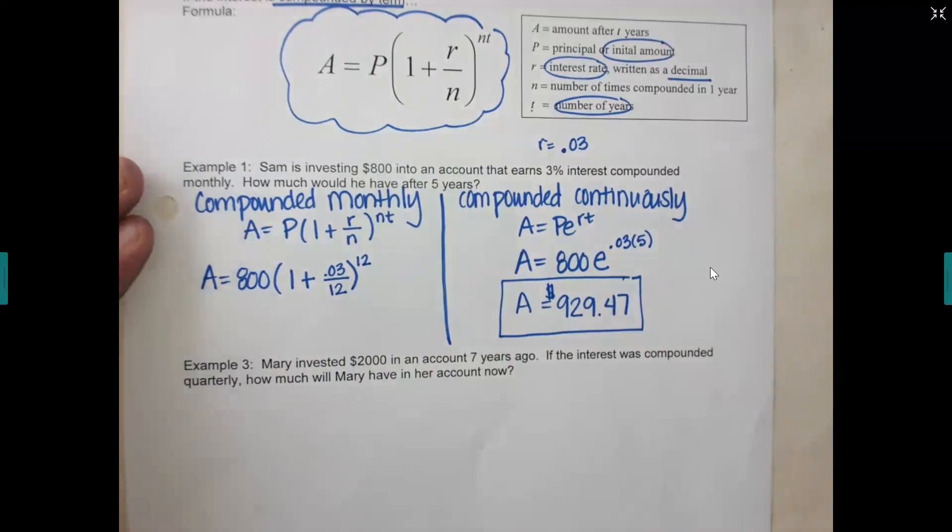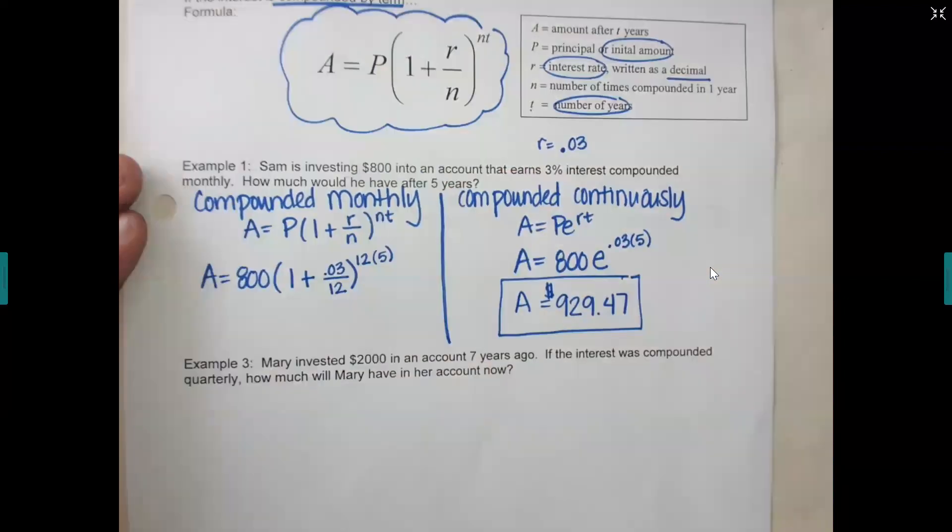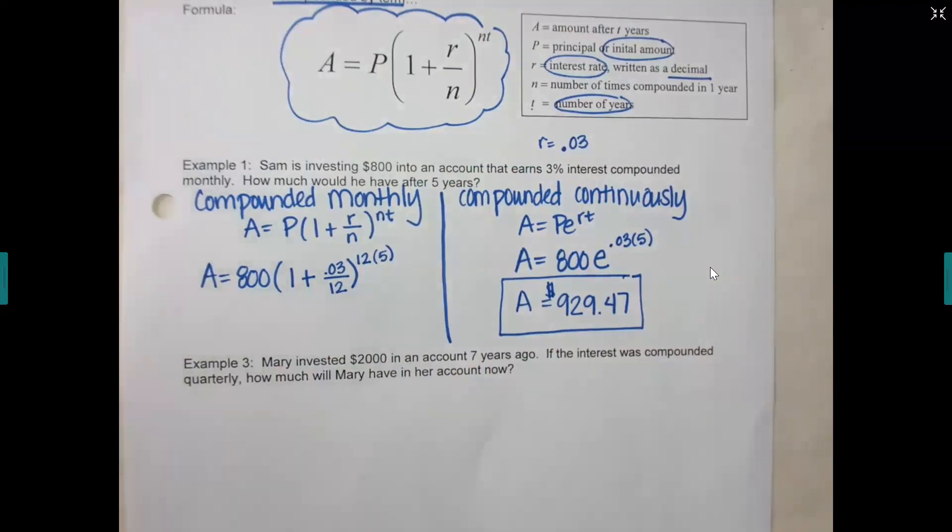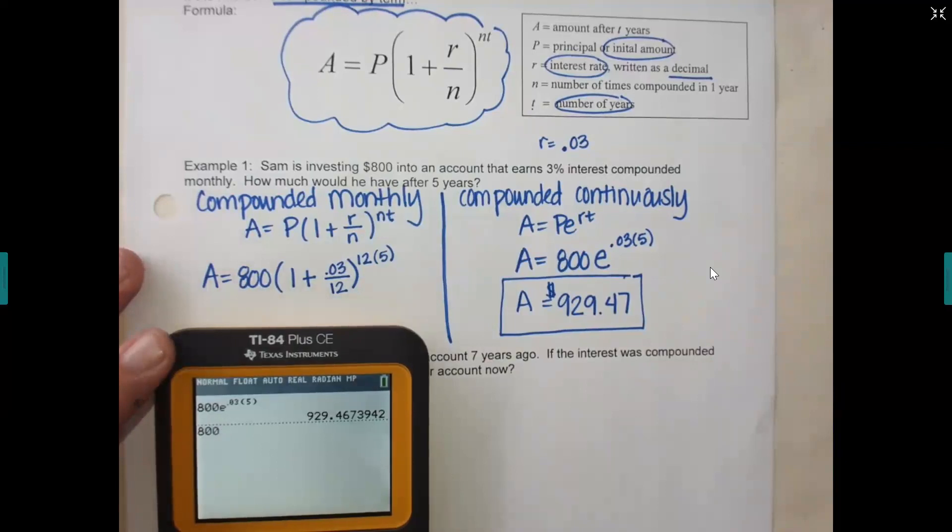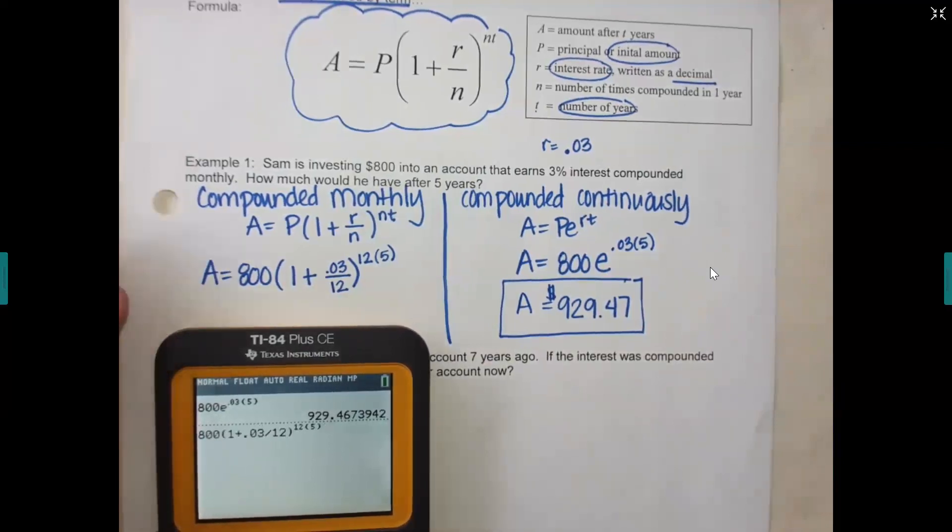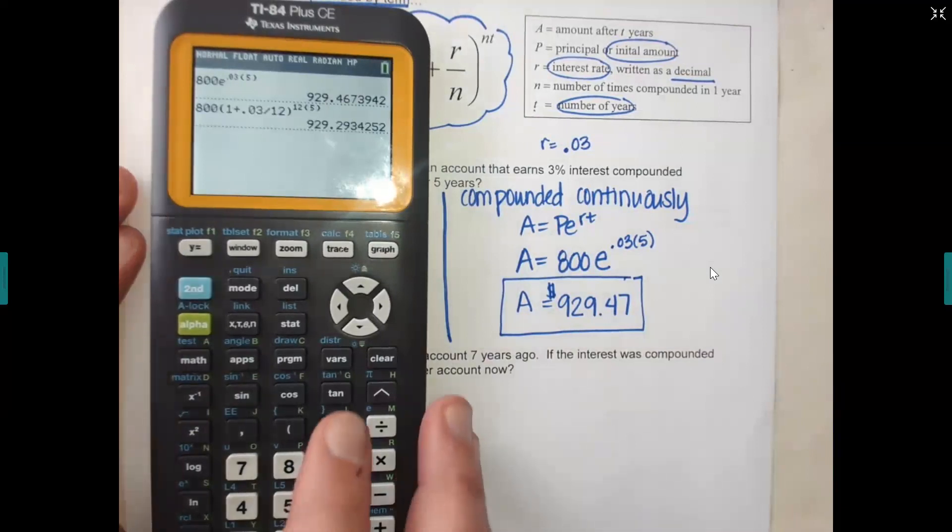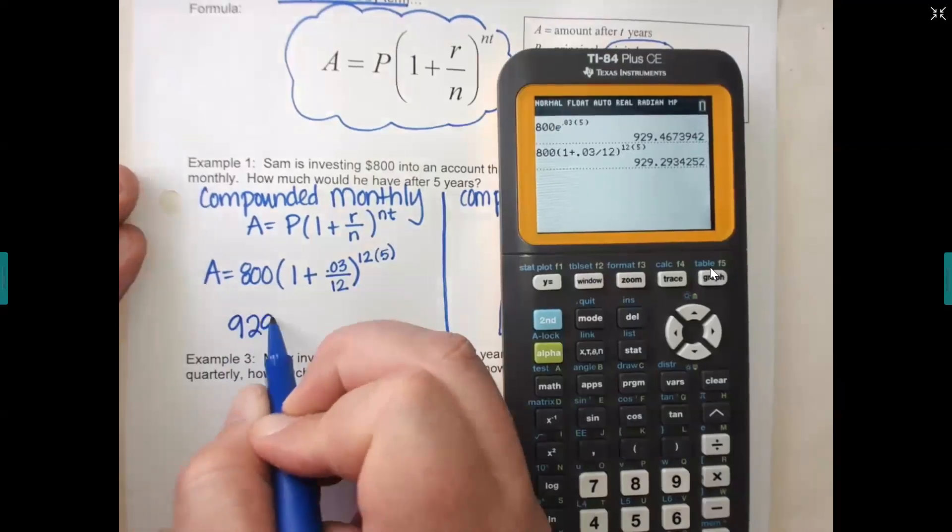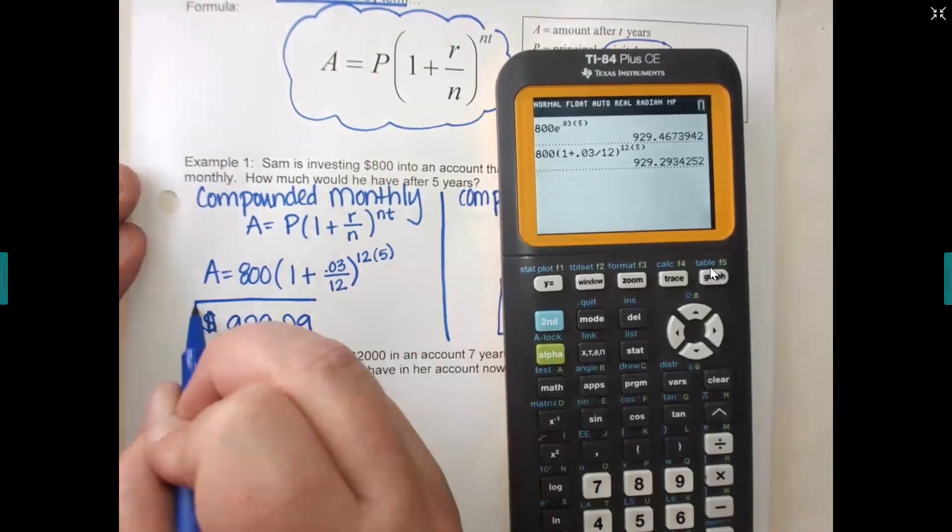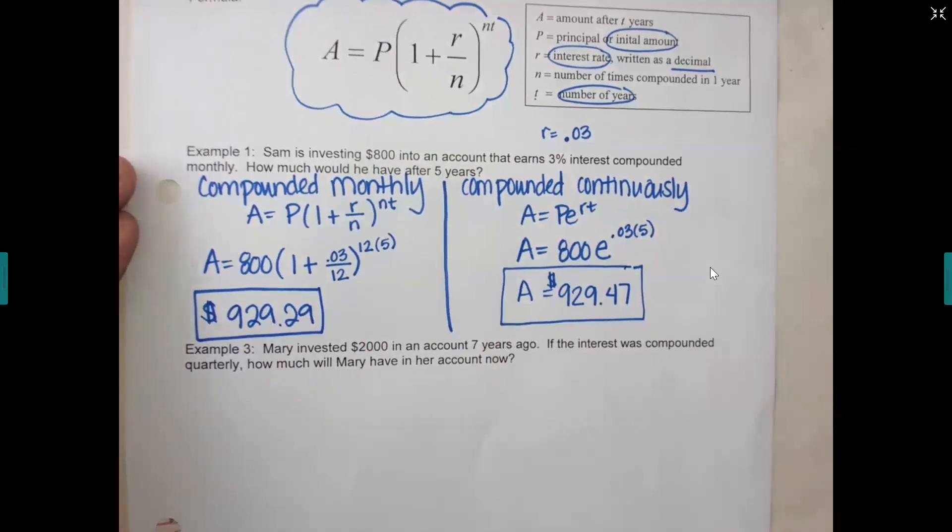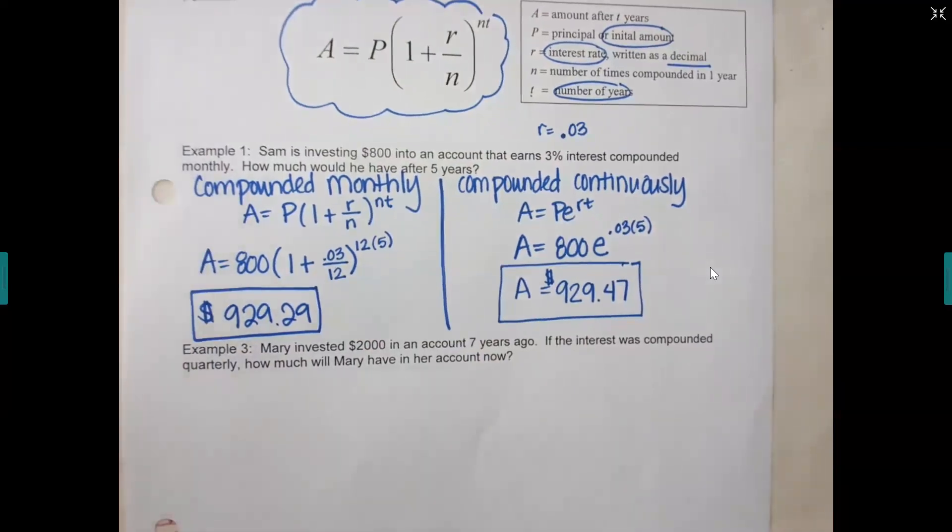So you're going to put a 12 here and a 12 here. Because do you notice that your N is in the formula twice? It's under the R and it's up top. Then how many years are we going to wait? Five. So now put that into your calculator and let's just compare the two. A monthly compounded interest compared to a continuously compounded interest. And you'll notice the answers are pretty close. You can see how I've typed it in here if you want to. You can use the little fancy fraction for the 0.03 over 12, but you don't have to. So it comes out to $929.29.